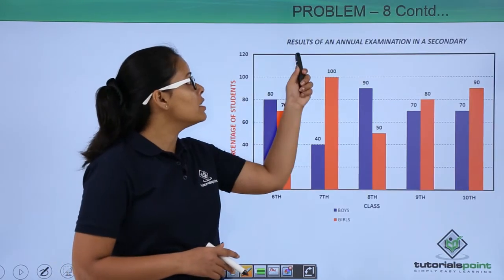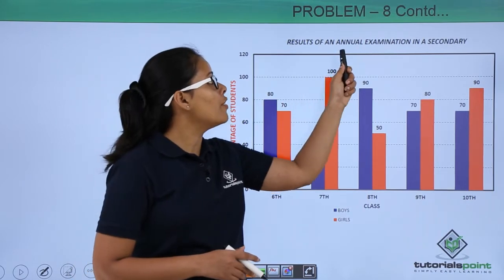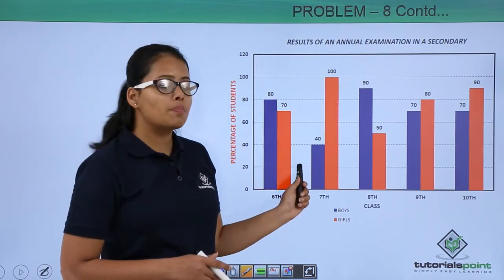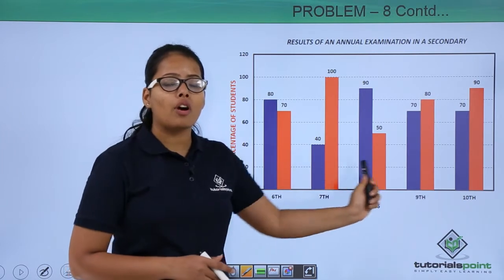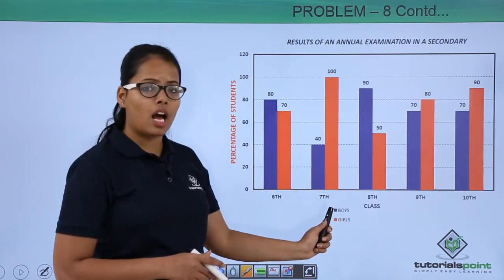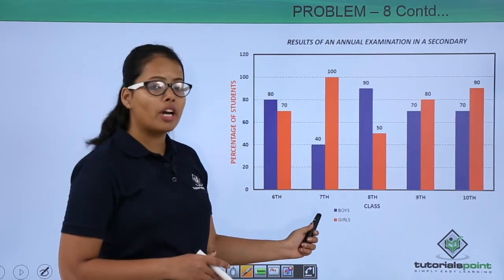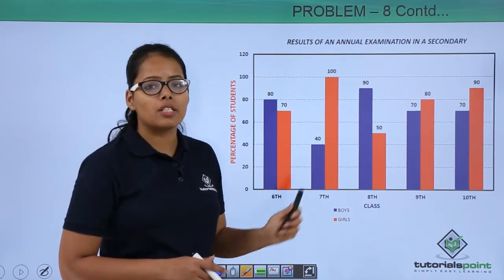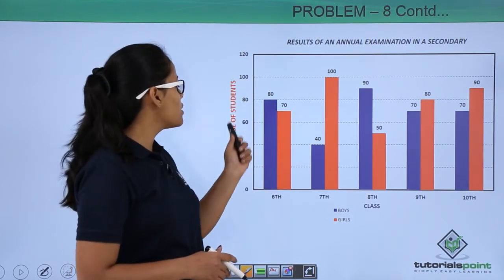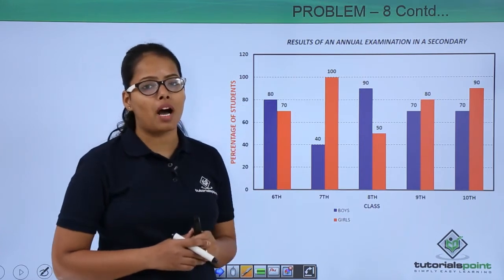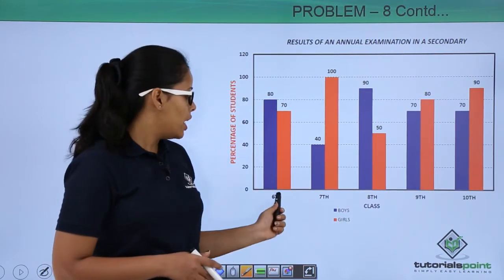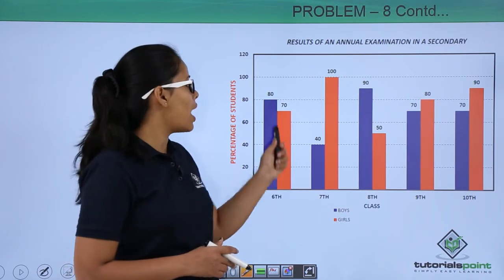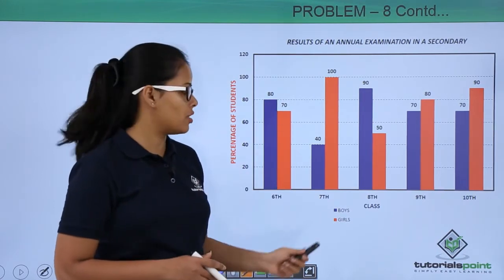Our bar graph represents results of an annual examination in a secondary school. In this bar graph, the x-axis represents the class, which shows the passing percentages of boys and girls, and the y-axis represents the percentage of students passed in the corresponding class. In class 6, 80% of boys got passed and 70% of girls got passed.